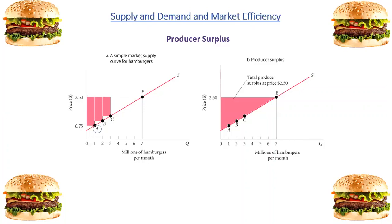Since producers are paid $2.50, they can earn a producer surplus of $1.75, which is the difference between $2.50 and $0.75. Since the market price of hamburgers is $2.50, the area of the shaded triangle is equal to total producer surplus.